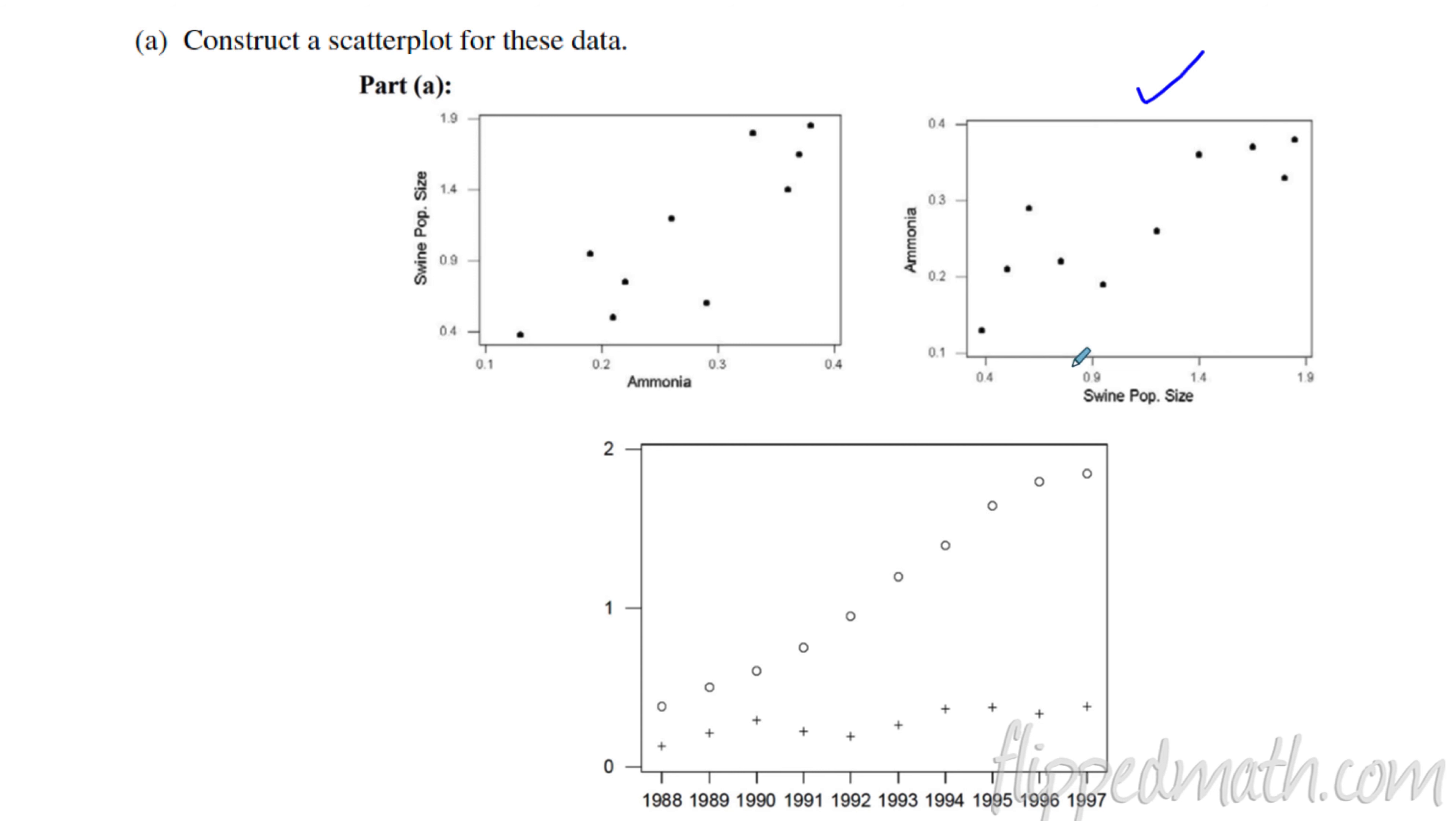And intuitively, that's how we want to set it up. In this problem here, I would assume that we are looking at the atmospheric ammonia based off of what the swine population is. We're not looking at what the swine population is based off of the atmospheric ammonia. That's probably going backwards.